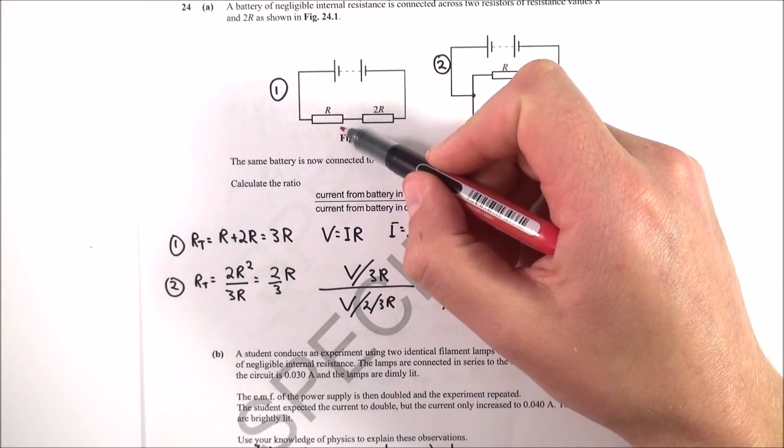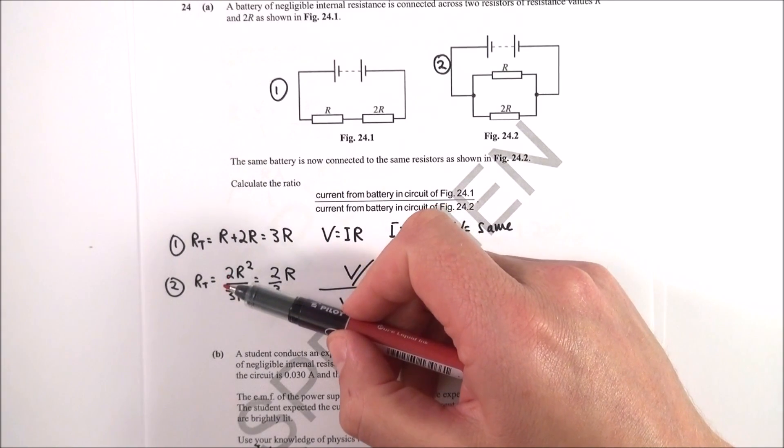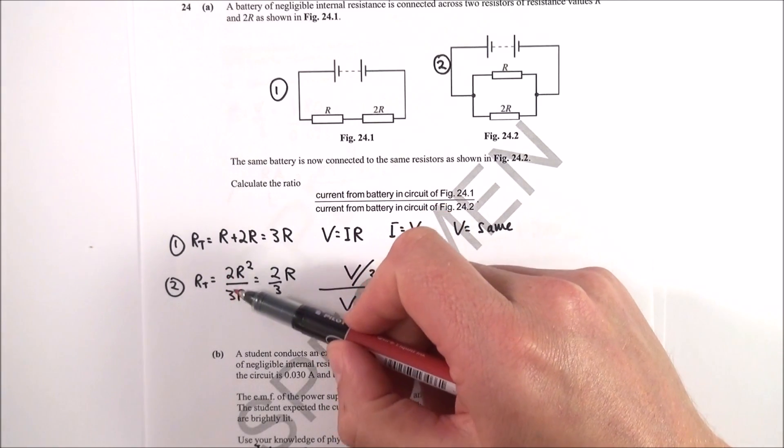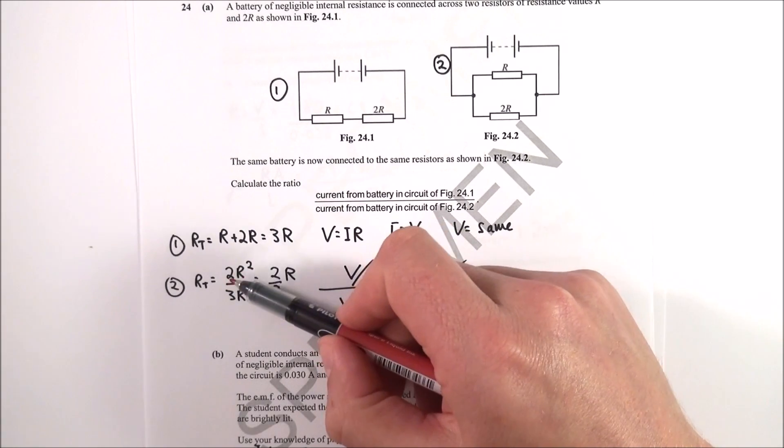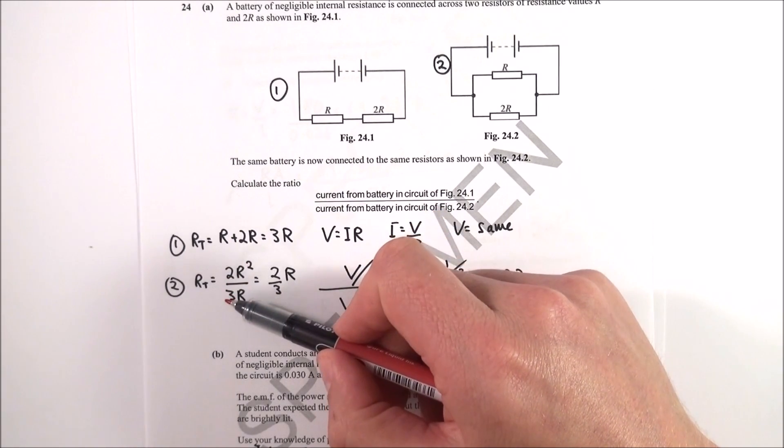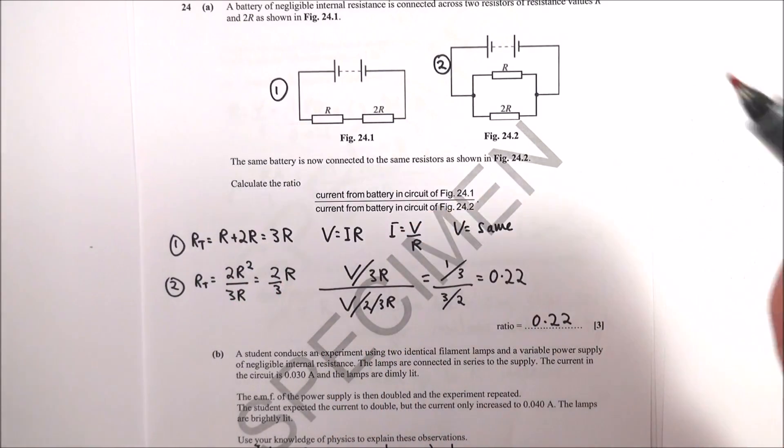This one here I used product over sum, so you've got two resistors in parallel and therefore the combined resistance is equal to the product, which is R times 2R, which is 2R squared, over their sum, which is R plus 2R, so 2R squared over 3R, which is two-thirds R.